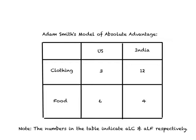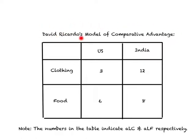Now consider the following example. Suppose the U.S. is better than India in every line of production in terms of number of labor hours required to produce different goods. In the U.S., you require three hours of labor time to produce one unit of clothing. In India, you require 12 hours of labor time to produce one unit of clothing. Hence, the U.S. is relatively more efficient in production of clothing relative to India.